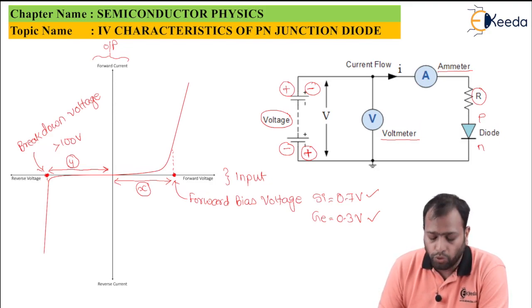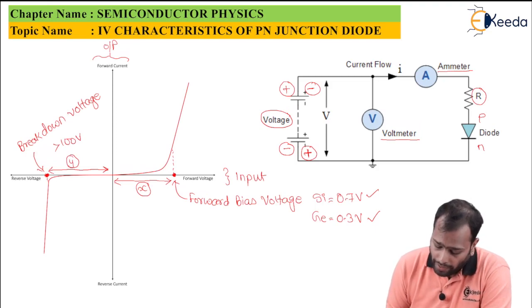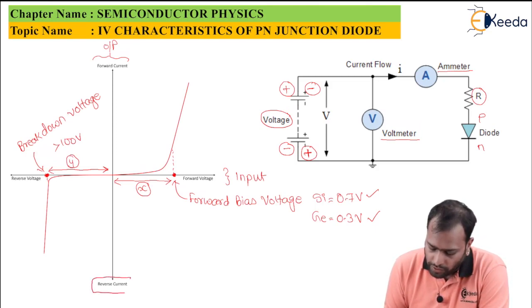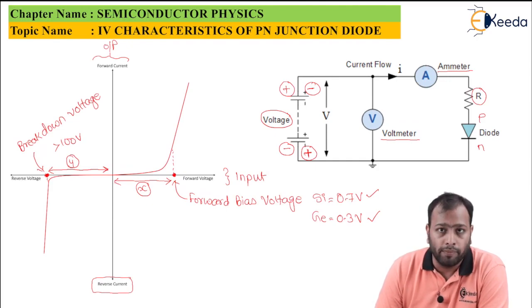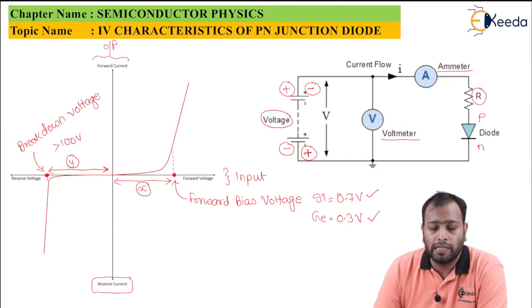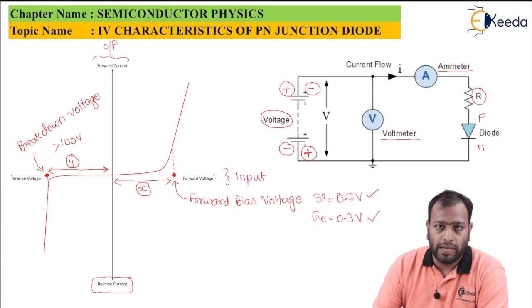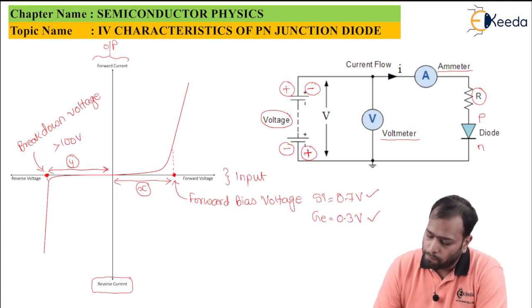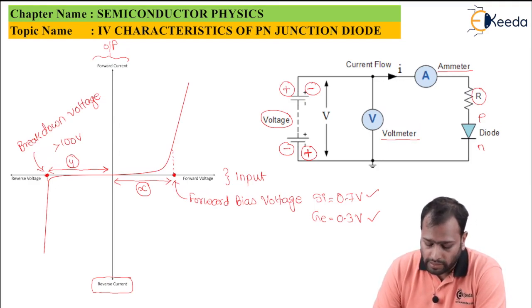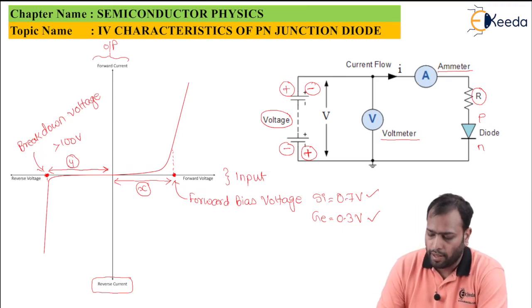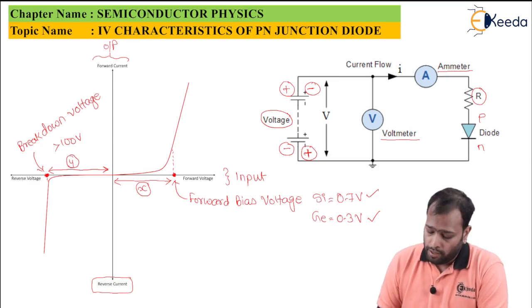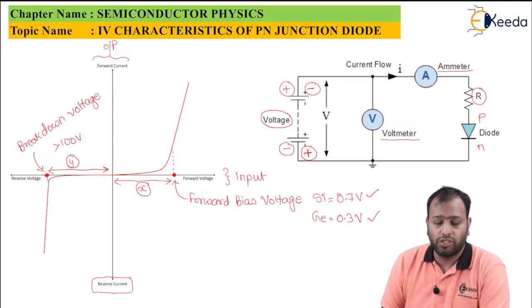This is the reverse current, meaning the current flows from N to P. In forward bias, conventional current flows from P to N, whereas in reverse breakdown, current flows from N to P. At this point, the diode is no longer functioning normally.